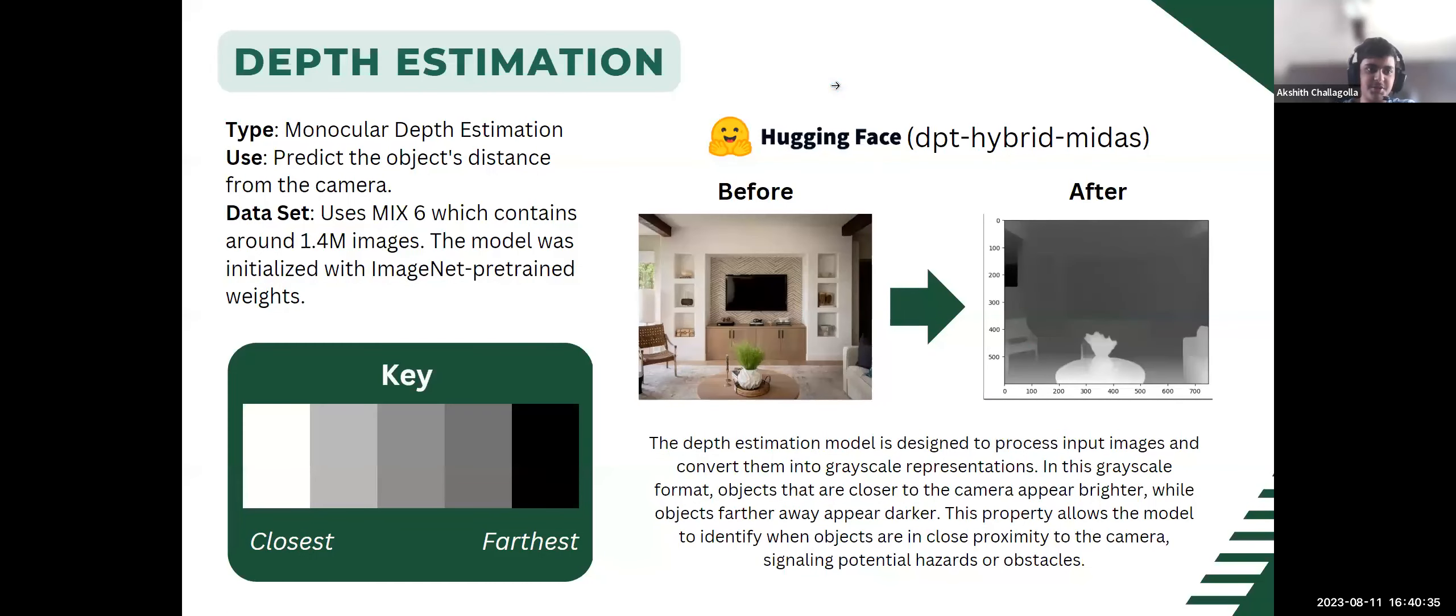For depth estimation, we used monocular depth estimation to predict the object's distance from the camera. The dataset uses MIX-6, which contains around 1.4 million images. The model was initialized with ImageNet pre-trained weights. The depth estimation model processes input images and converts them into grayscale representations. In this grayscale format, objects closer to the camera appear brighter while objects farther away appear darker. This allows the model to identify when objects are in close proximity to the camera, signaling potential hazards.